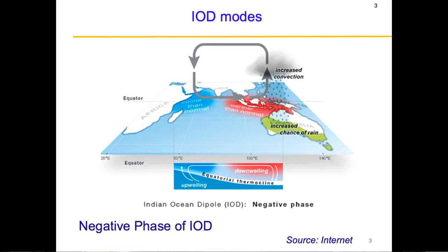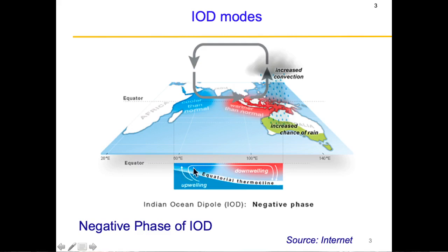During the negative phase of IOD, the water near Sumatra becomes anomalously warmer and the water near Somalia becomes anomalously cooler. From the neutral phase, the warm water becomes much warmer and the cooler water becomes much colder. This causes a strengthening of the Walker circulation cell near the equator, pushing a lot of moisture towards the East Indian Ocean and increasing convective activity there. The thermocline also changes shape, with upwelling in the western part and downwelling in the eastern part, so it slopes preferentially towards the West Indian Ocean near Somalia, accumulating cold water in that region.